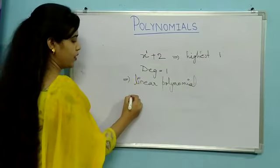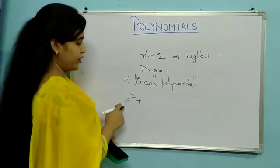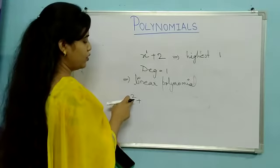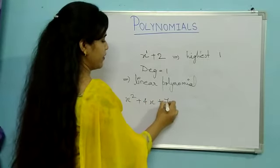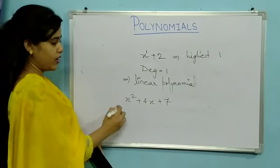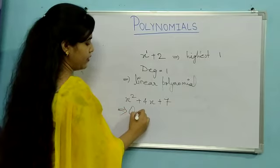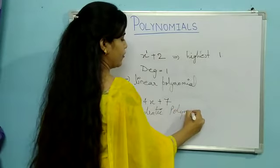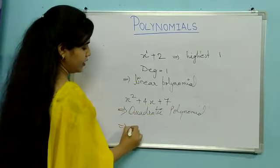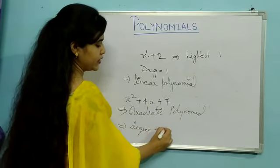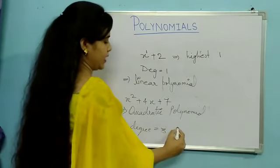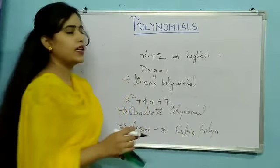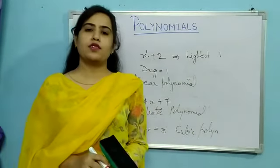When we have any polynomial of degree 2 — meaning the highest power in the entire polynomial is 2, for example 4x squared plus 4x plus 7 — the degree is 2 because the highest power of x is 2. Such polynomials are called quadratic polynomials. And if the degree of a polynomial is 3, those polynomials are called cubic polynomials.